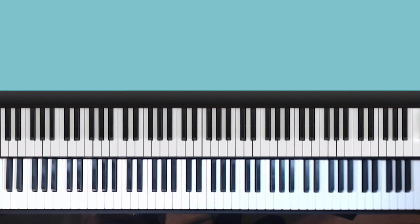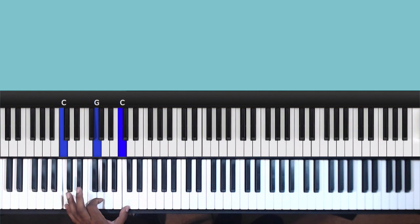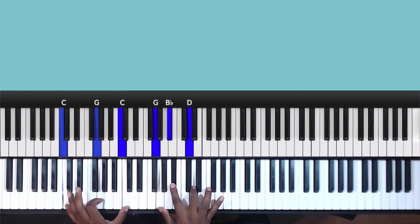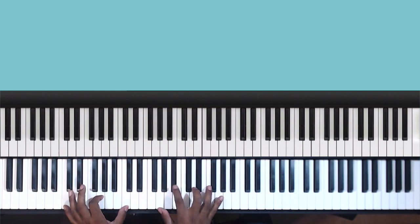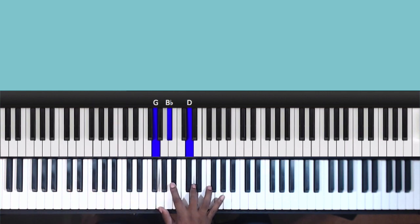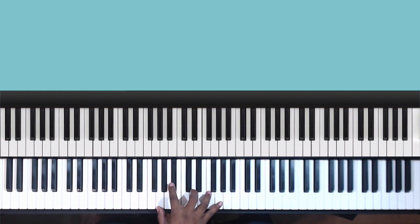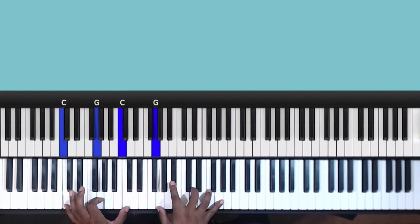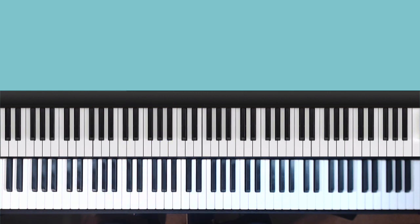So the voicing I am demonstrating for this is C, G, C in the left hand. In the right hand you are going to have G, B flat, D, and F, which in essence you are forming a minor 7th chord on the 5th of the chord.